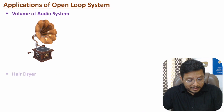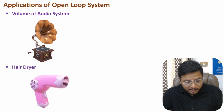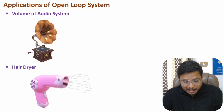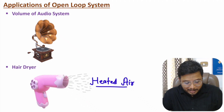One more example is a hair dryer. Here the input could be 1, 2, 3, 4, 5. That input is given to the controller, which controls the control signal, and that is given to the plant. Here the plant generates heated air. So based on the input setting, the temperature of the heated air is controlled.